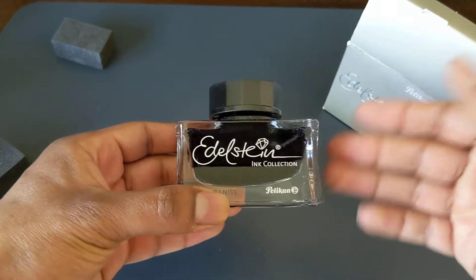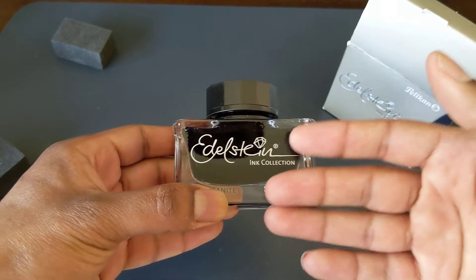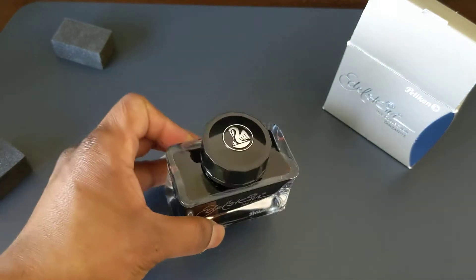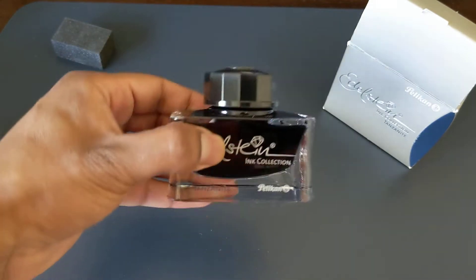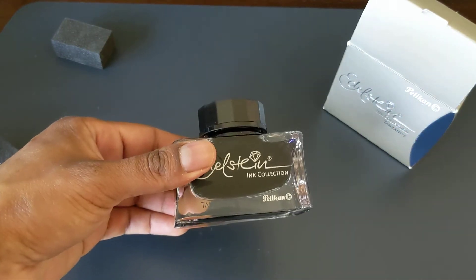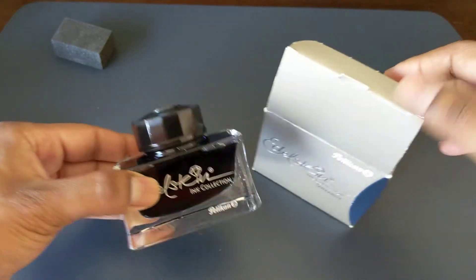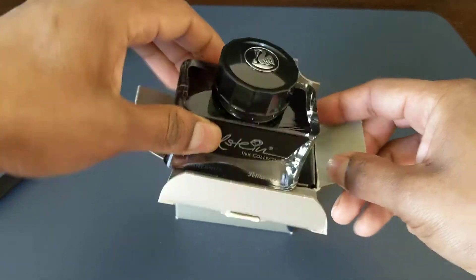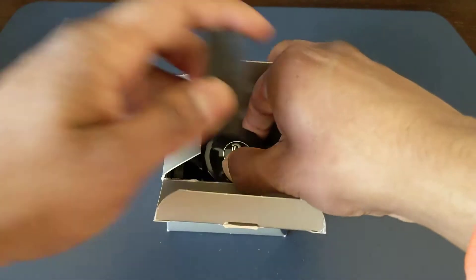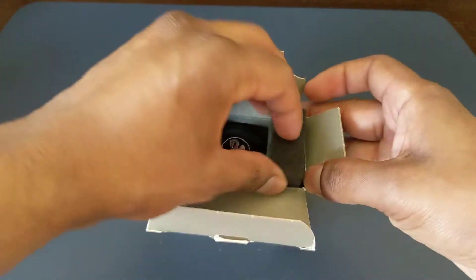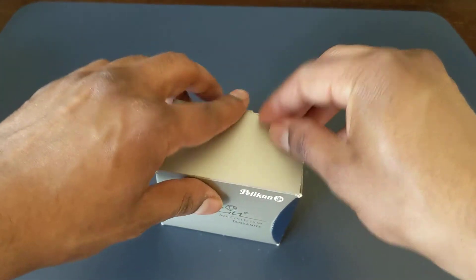The unfortunate part though is because it's wide and shallow, it's not the easiest to fill ink from. If you have a lot of ink in it, it's pretty easy, but if you get down toward the bottom it gets more difficult. Also Pelican inks tend to be dry and I like a wetter ink, so this isn't an ink that I reach for a whole lot. But when I do, the bottle is nice to look at.